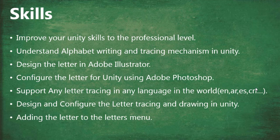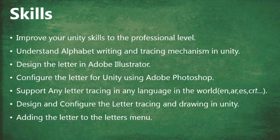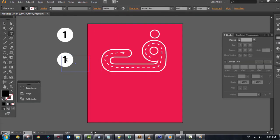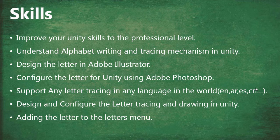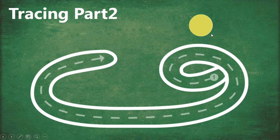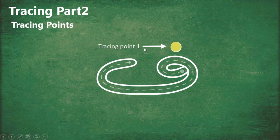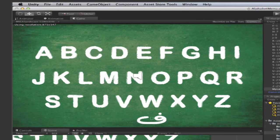The skills you're going to gain from this course: you're going to improve your Unity skills to a professional level, understand alphabet writing and tracing mechanisms in Unity, design letters in Adobe Illustrator, configure letters using Adobe Photoshop, and support any letter tracing in any language in the world. You're going to be able to draw and configure any letter to the alphabet board, including design and development for any language.